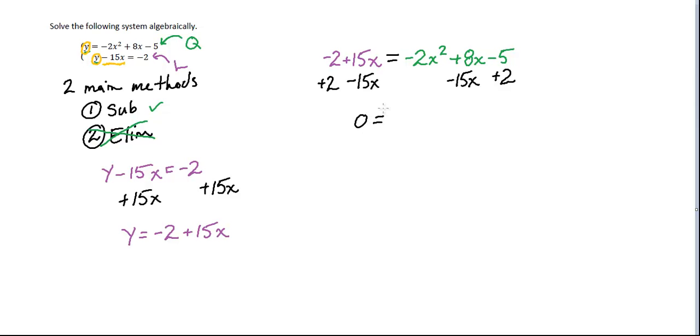Alright, so now I've got 0 is equal to negative 2x squared minus 7x minus 3. Wow, that took thought. Holy crap. Okay.